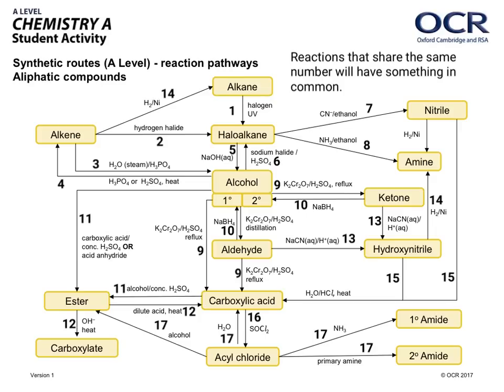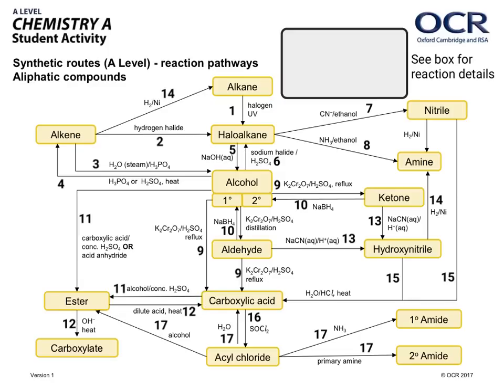As I go through this, I'll number certain reactions that I feel may need further discussion. And in this space up at the top right-hand corner, I'll go through anything extra that needs to be thought about when you're revising this. The grey box will be where I'll put any reaction details or mechanisms that need to be discussed.